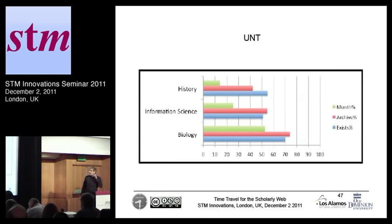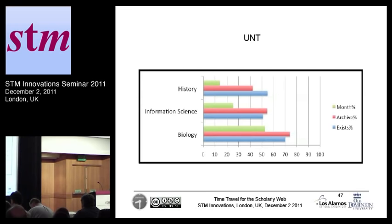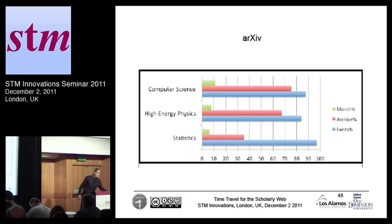Even more interesting is this picture. I want you to focus on the 'month percent' column — what this shows is the percentage of linked things for which an archived version exists within a temporal span of one month after publication of the citing paper. The situation is rather good for the institutional repository but hardly anything for the physics archive. For less than 10% of things being cited is there an archived copy within a month around the time of publication. So the point is: you cannot recreate the temporal context. Even though Memento as a technology would allow you to go to those old versions, the old versions simply do not exist.